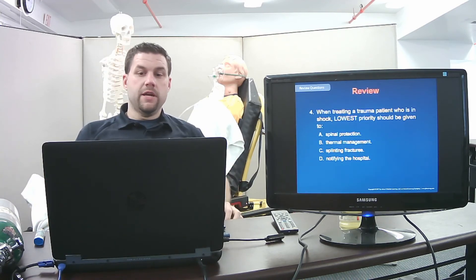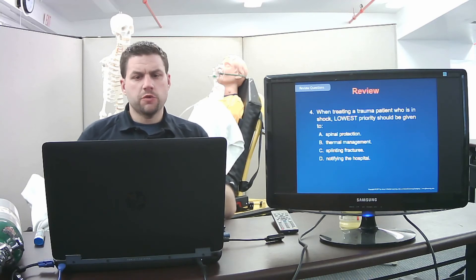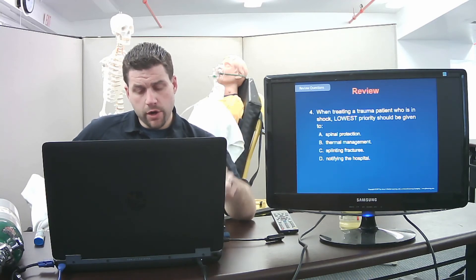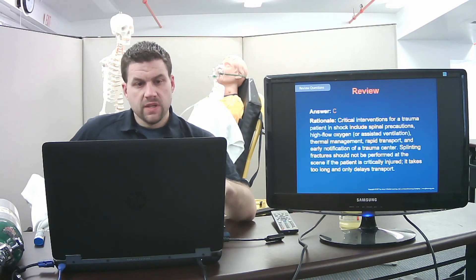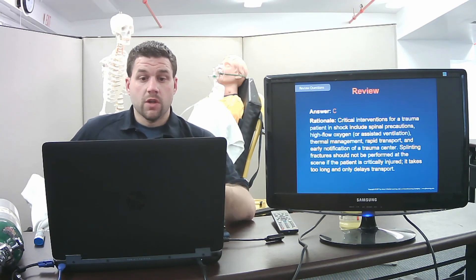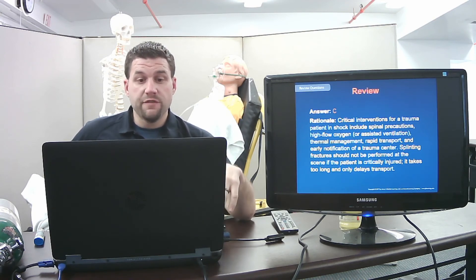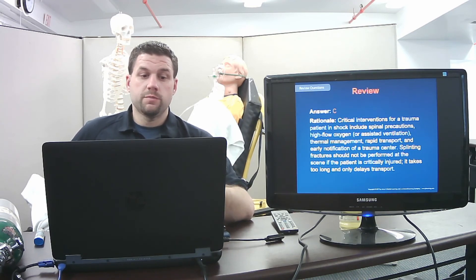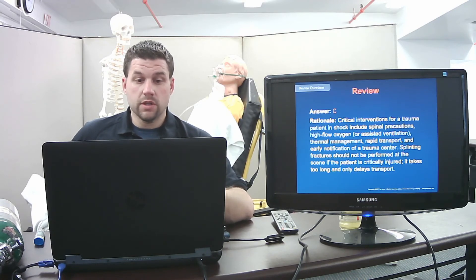When treating a trauma patient in shock, the lowest priority should be given to — answer C — splinting fractures. Critical interventions include spinal precautions, high-flow oxygen, thermal management, rapid transport, and early trauma center notification. Splinting fractures should not be performed at the scene for critically injured patients — it takes too long and delays transport.